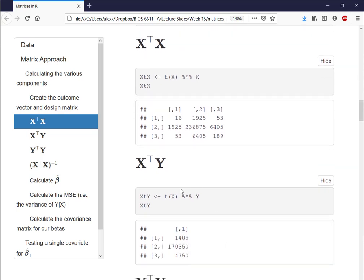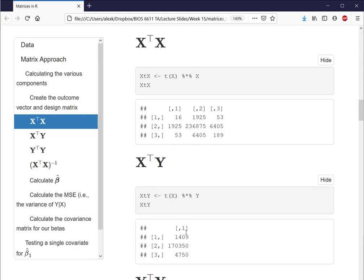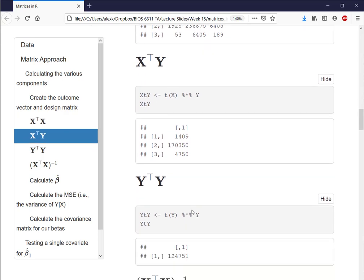Likewise for X transpose Y, we'll take the transpose of X multiplied by Y, and we see here we have 3 rows and 1 column.